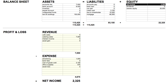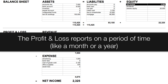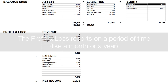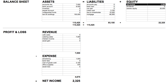Your profit and loss report is made up of your revenue and expense accounts. It shows your net income, which is your revenues minus expenses. Unlike the Balance Sheet, it is showing your net income for a certain period in time, whether it be a month or a year. At the end of a year, the profit and loss resets itself and starts over again. That year in accounting is called the fiscal year.